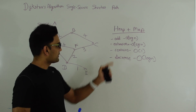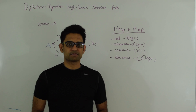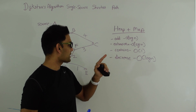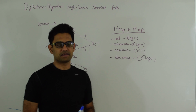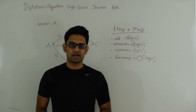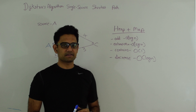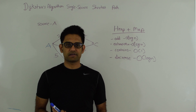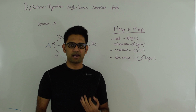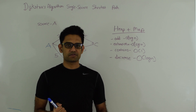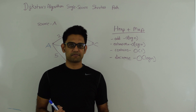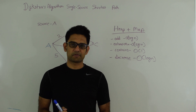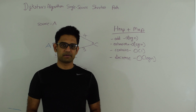For Dijkstra's algorithm we need a data structure called heap plus map, which supports four operations: add, extract min, contains, and decrease key. I have already talked about this data structure in Prim's algorithm. This data structure is a combination of a binary heap and a hash map, and the link to that video is also attached here. So watch that video first before watching this algorithm.